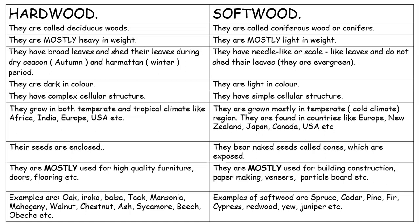Hardwood have their seeds enclosed, while softwood bear naked seeds, which are called cones. Hardwood grows in temperate and tropical climates like in Africa, India, Europe, and the USA, while softwood grows mostly in cold regions — in countries like Europe, New Zealand, Japan, Canada, and the likes. Examples of hardwood include oak, iroko, balsa, teak, mansonia, and mahogany. Examples of softwood include spruce, cedar, pine, fir, and juniper.